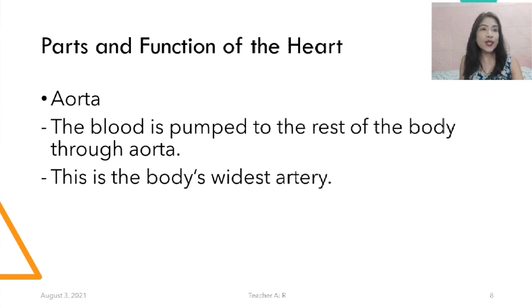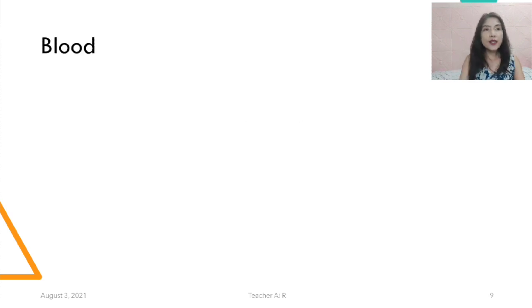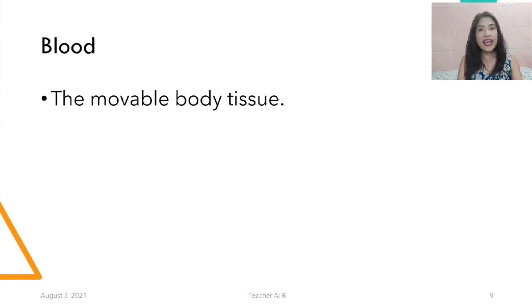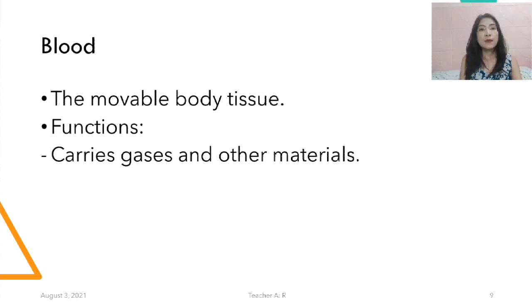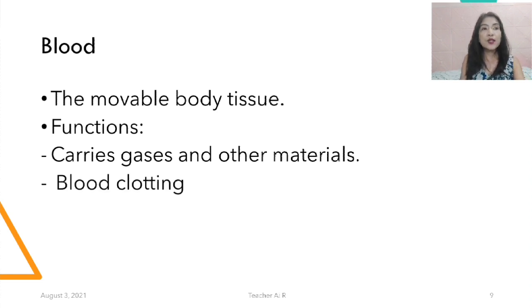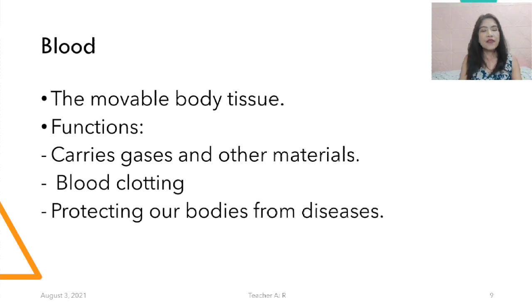Remember that the aorta is the biggest, widest artery. Another part of the circulatory system is the blood — it's the movable blood tissue, of course moving in our body. The functions of blood are: number one, it carries gases and other materials; number two, it functions as a blood clotting mechanism; and number three, it functions as protection of our bodies from diseases.